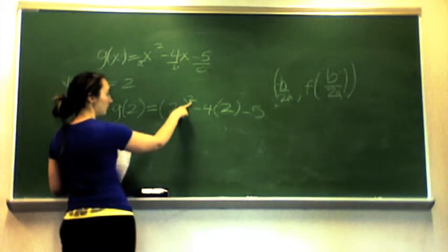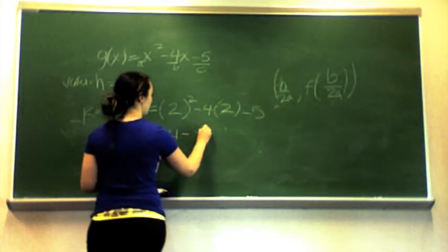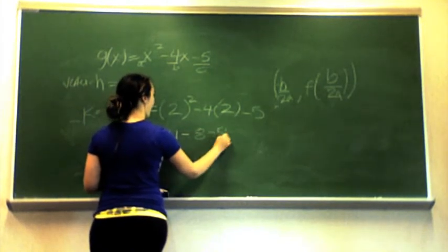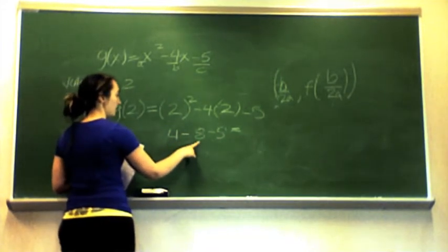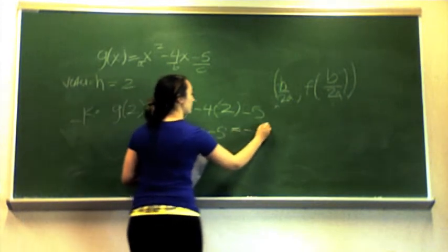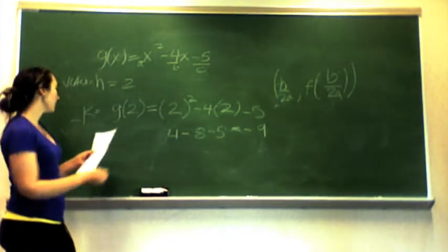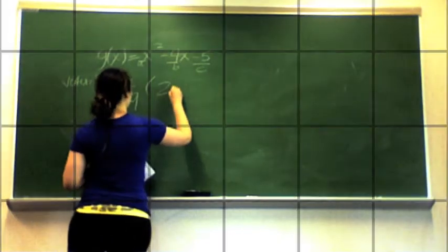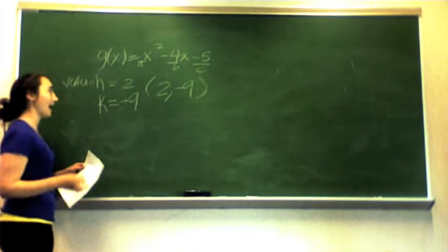So: 2 squared is 4, minus 4 times 2 which is 8, minus 5. Then 4 minus 8 is negative 4, and negative 4 minus 5 is negative 9. So our k is equal to negative 9, making our vertex the center point (2, −9).